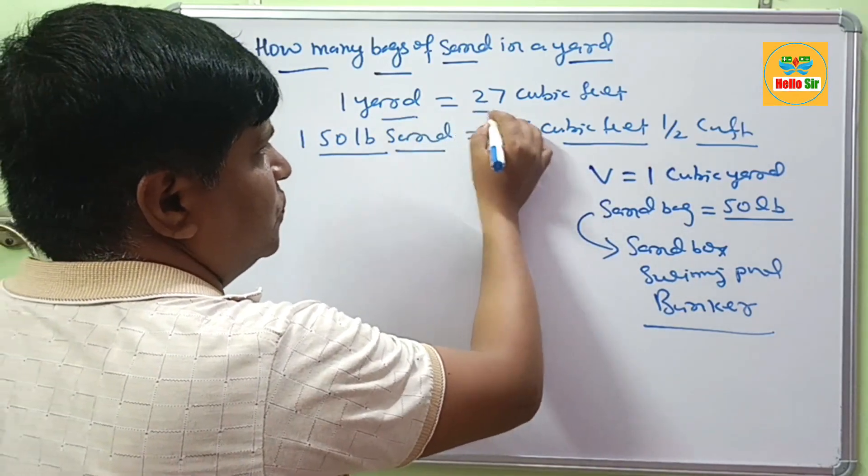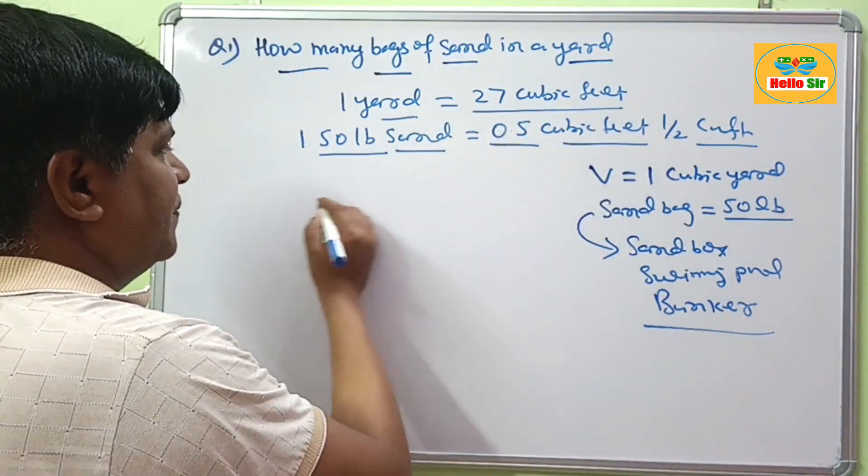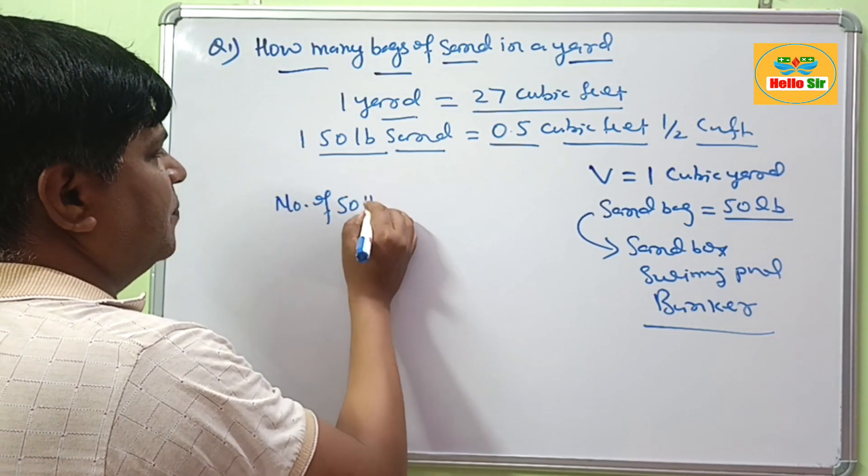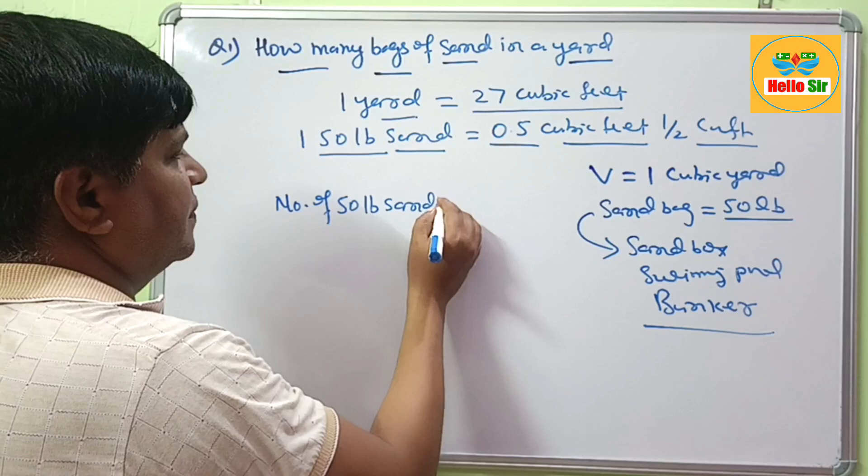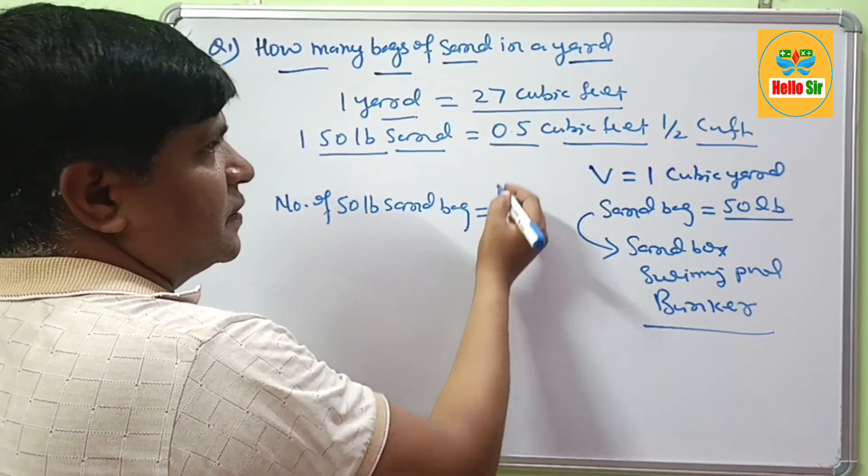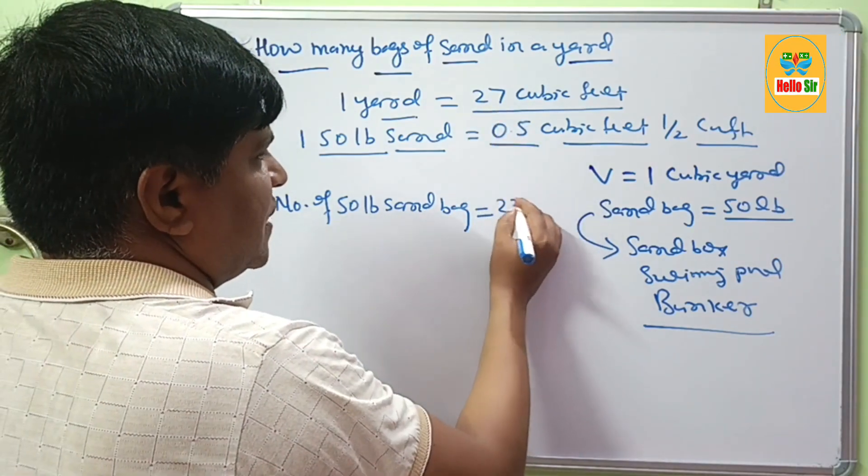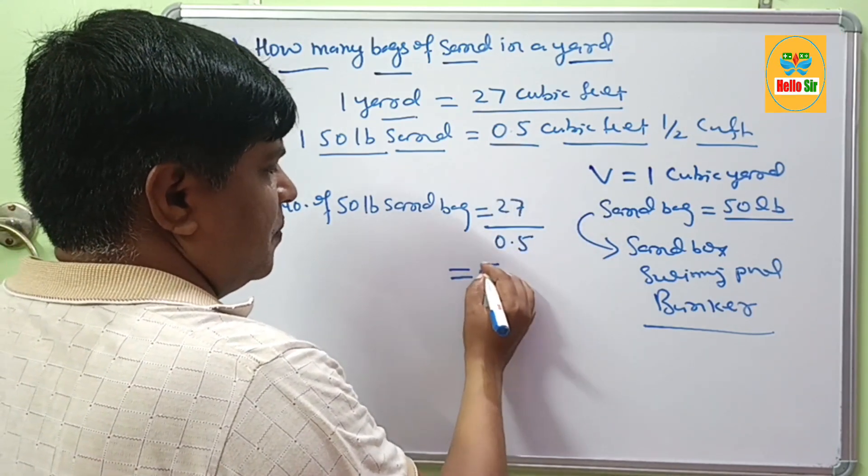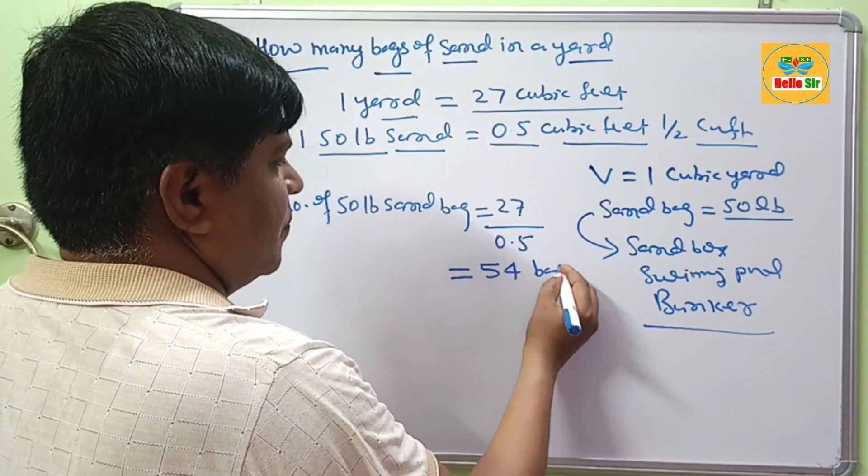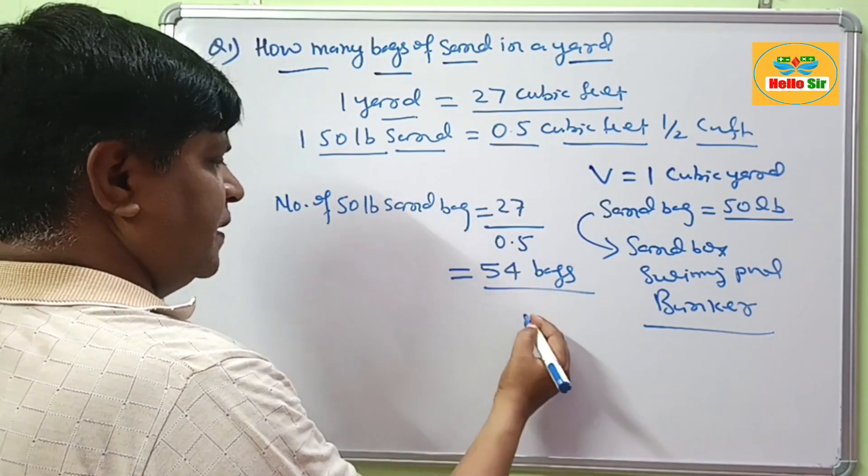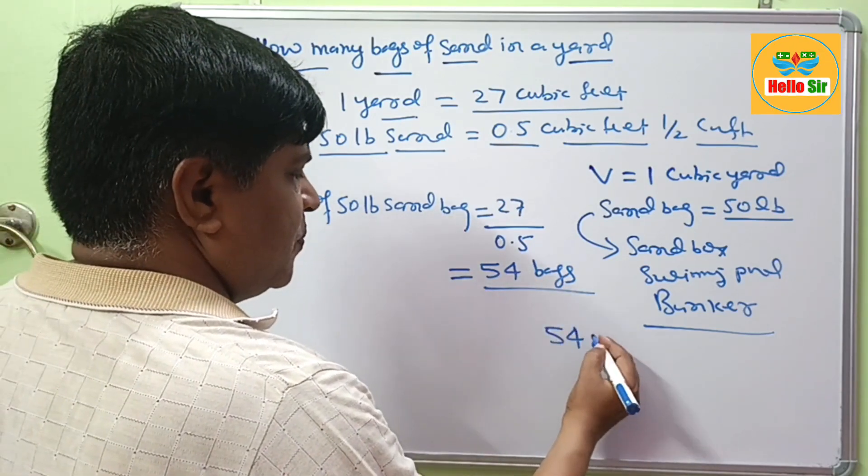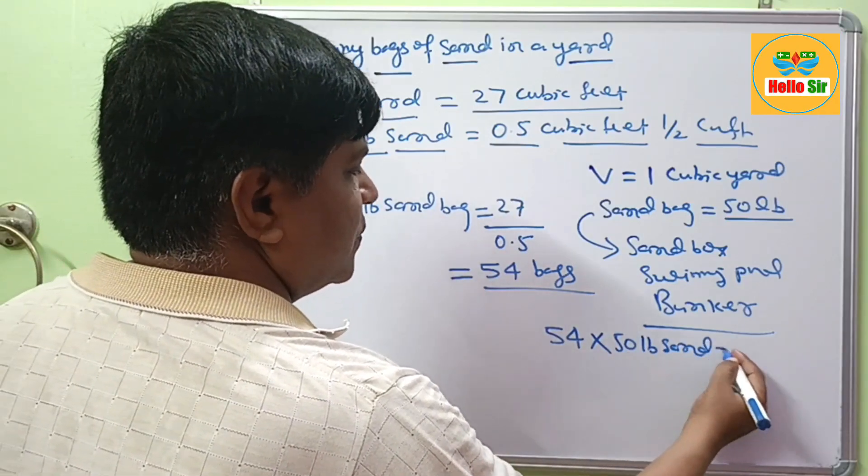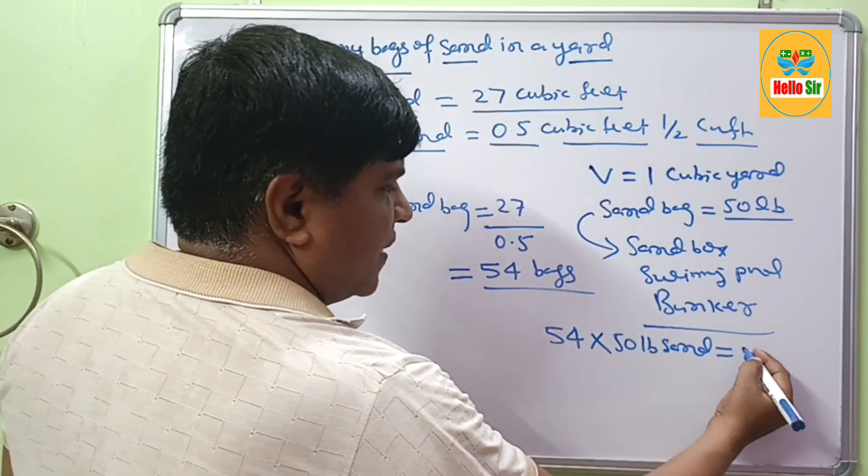1 yard is equal to 27 cubic feet. To calculate the number of 50 lb sand bags, divide 27 cubic feet by 0.5 cubic feet. This will come to about 54 bags. You need about 54 bags of 50 lb sand to make 1 yard.